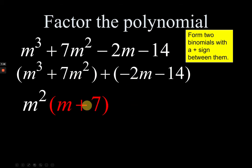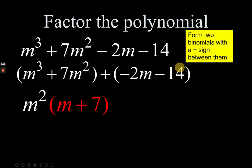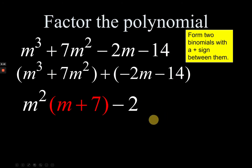For the second pair, both terms are negative — that's your hint you'll probably factor out a negative number to get a positive 7. The common factor is -2. Factoring out -2: m is left inside the parenthesis, and -14 divided by -2 gives +7, so you get (m + 7). You can verify: -2 times m is -2m, and -2 times 7 is -14.